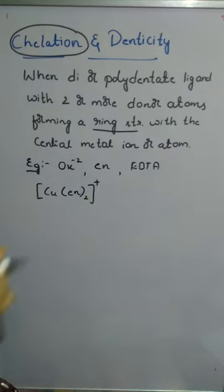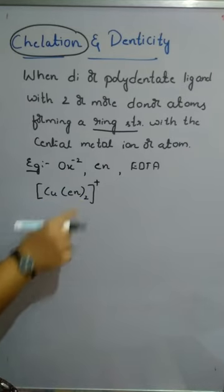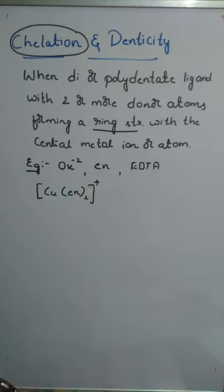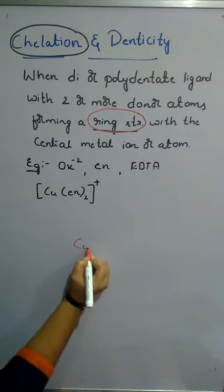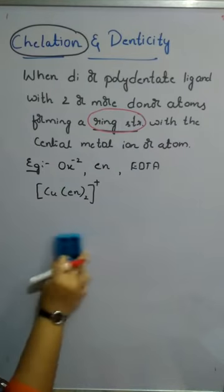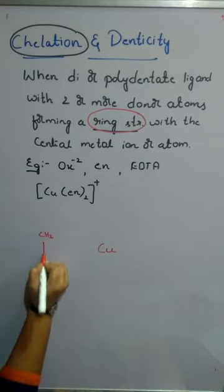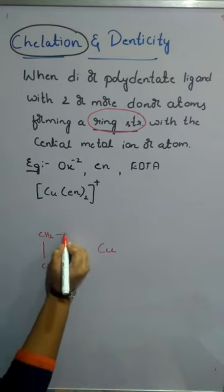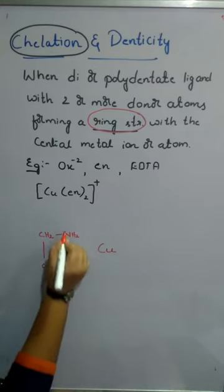We will take the example of copper bonded to ethylene diamine — two ethylene diamine molecules — with a positive charge, written as [Cu(en)₂]²⁺. Copper is the central metal. Each ethylene diamine molecule has the structure NH₂–CH₂–CH₂–NH₂.